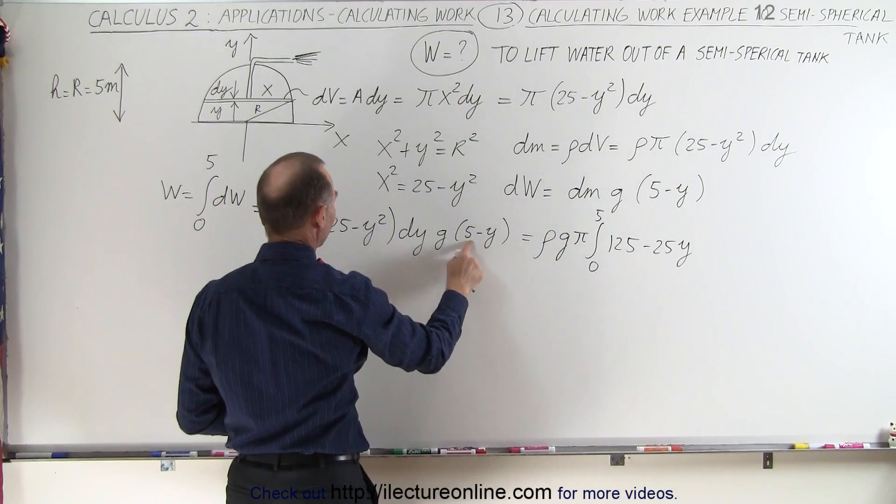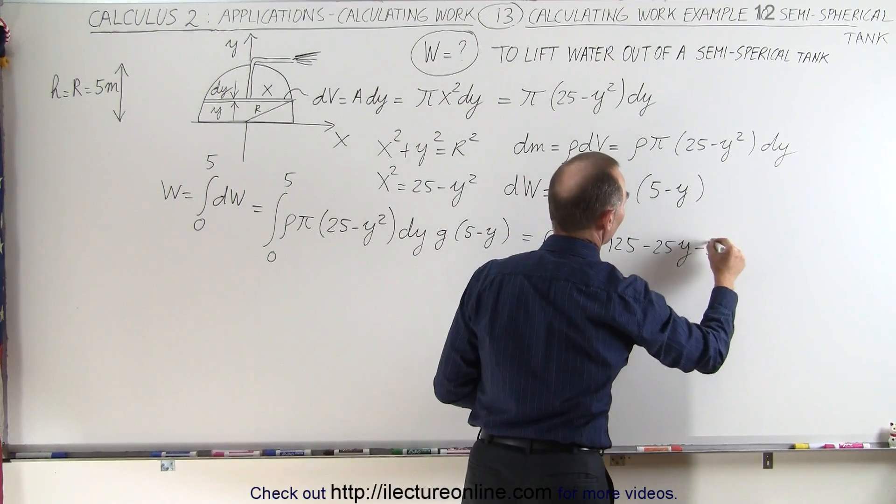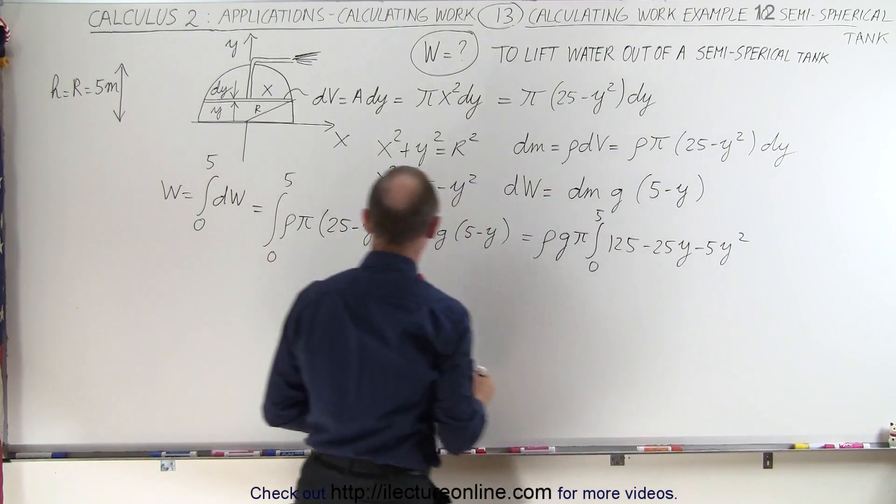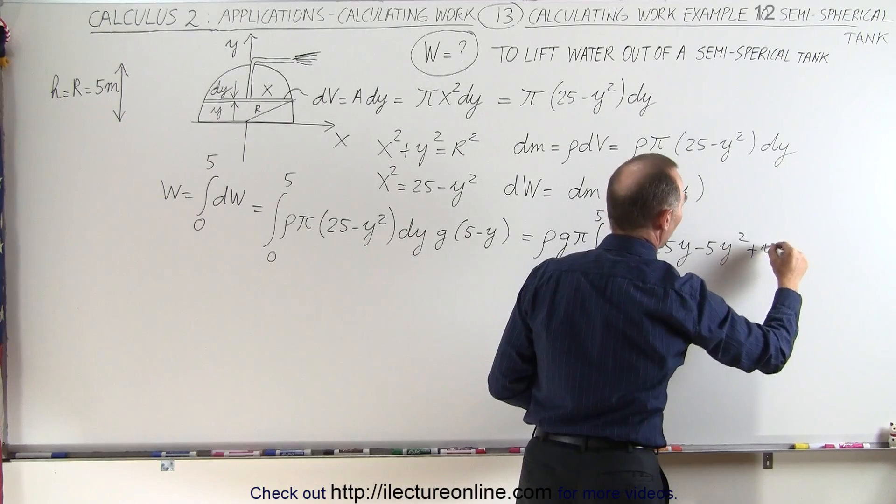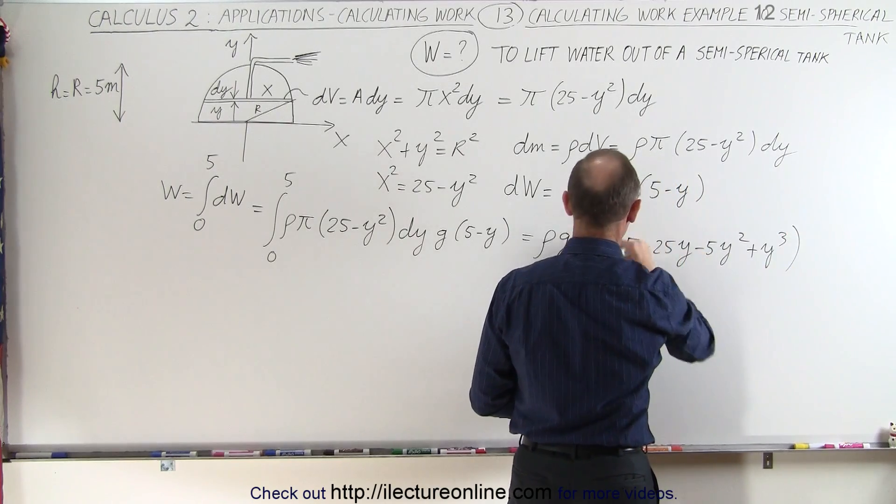We have 5 times minus y², that's minus 5y². And then we have minus y² times minus y, which is plus y³, all times dy.